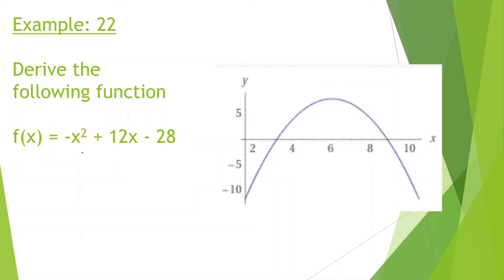Let's derive another equation. Again using the power rule, we bring down the exponent and get negative 2x plus 12. Where would the slope be 0? We can see it's going to be at 6. When we plug in 6, we get 0. So again, this derivative is giving us the slope at any given instant or position.